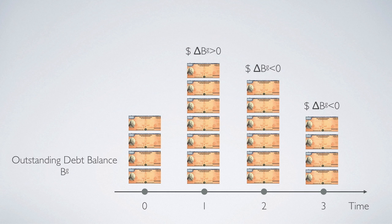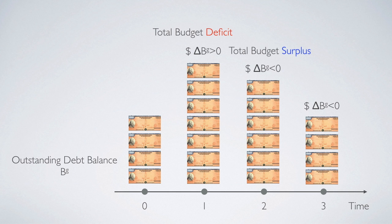Whenever government's outstanding debt balance increases, such as day 1, we say that government is running a total budget deficit. And if government's outstanding balance is decreasing — which means government is retiring its outstanding debt, for example on day 2 and 3 — then we say that the government is running a total budget surplus for day 2 and day 3.